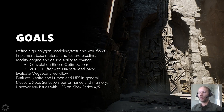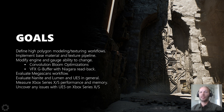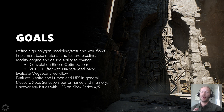Goals for AlphaPoint: we wanted to define high-polygon modeling and texturing workflows. We wanted to implement our new base material and texture pipeline. We wanted to modify the engine and gauge the ability to change the engine in UE5. We did two changes to this demo: we added convolution bloom for Xbox and optimized it, and we added the visual effects G-buffer with Niagara Readback.